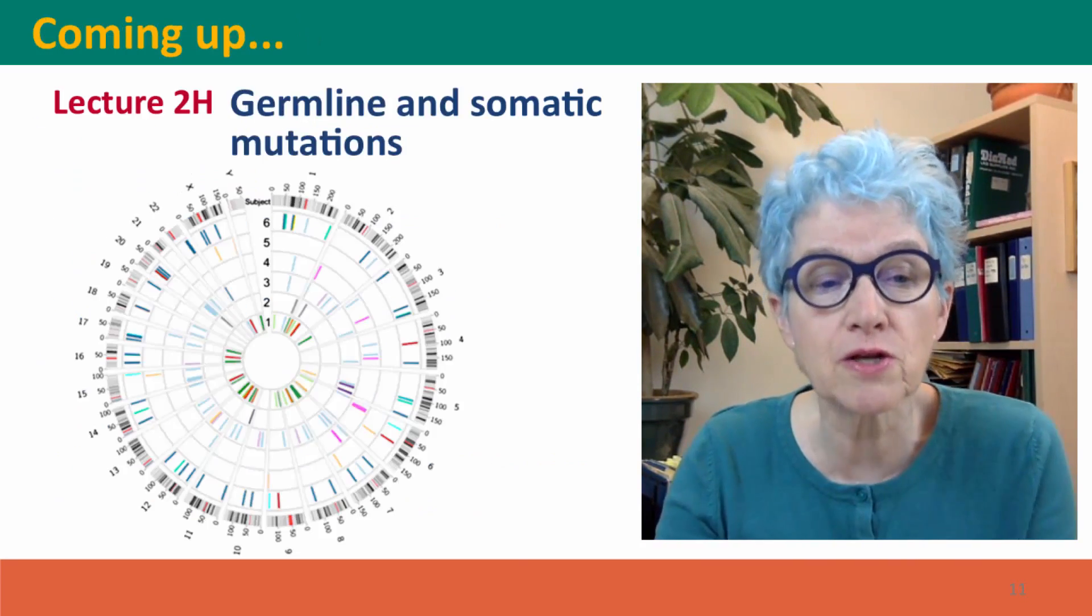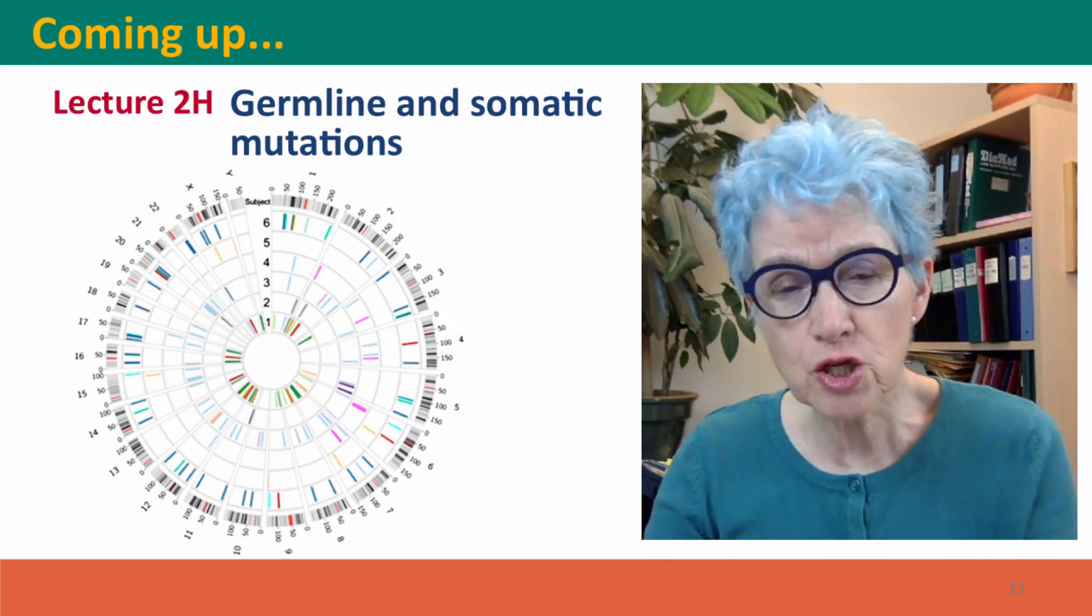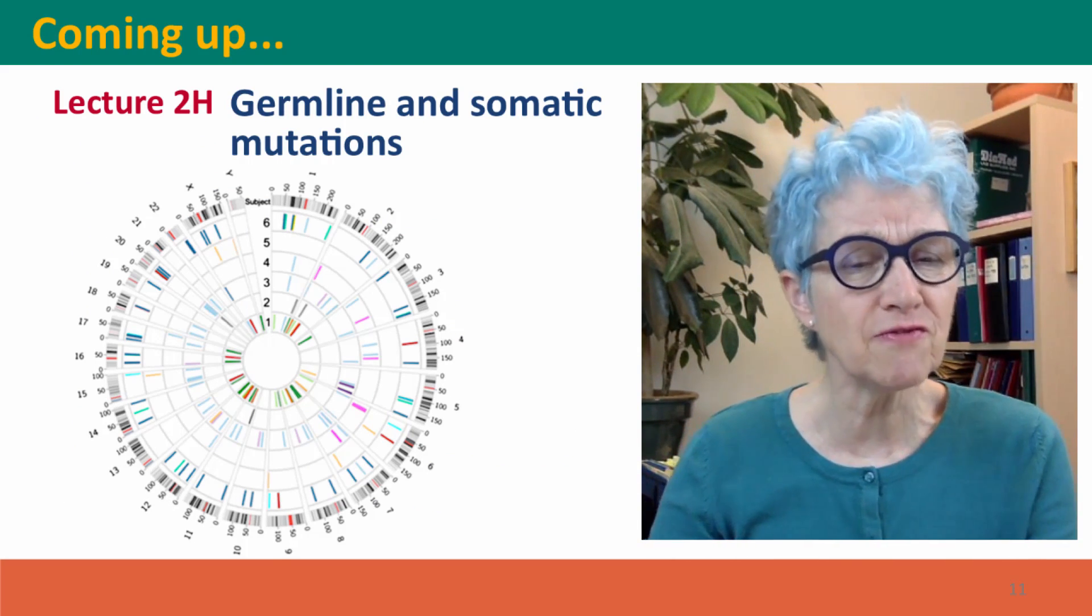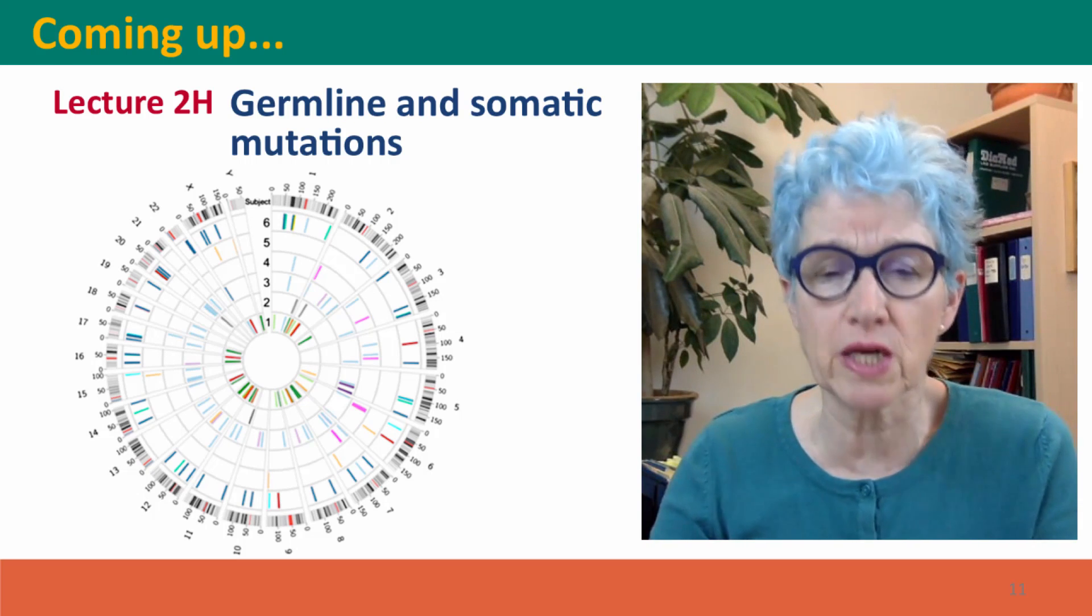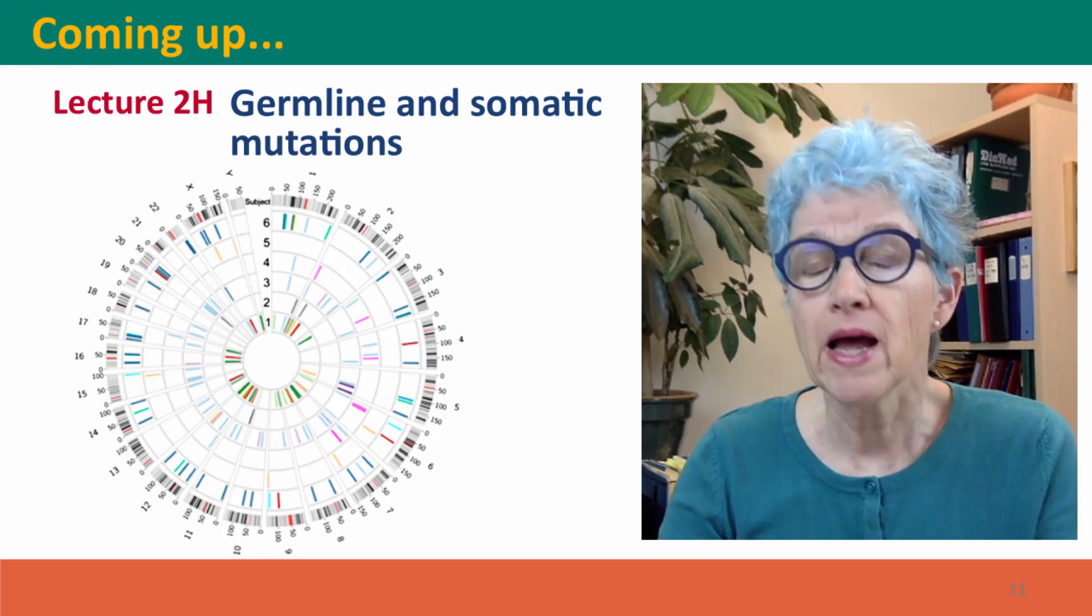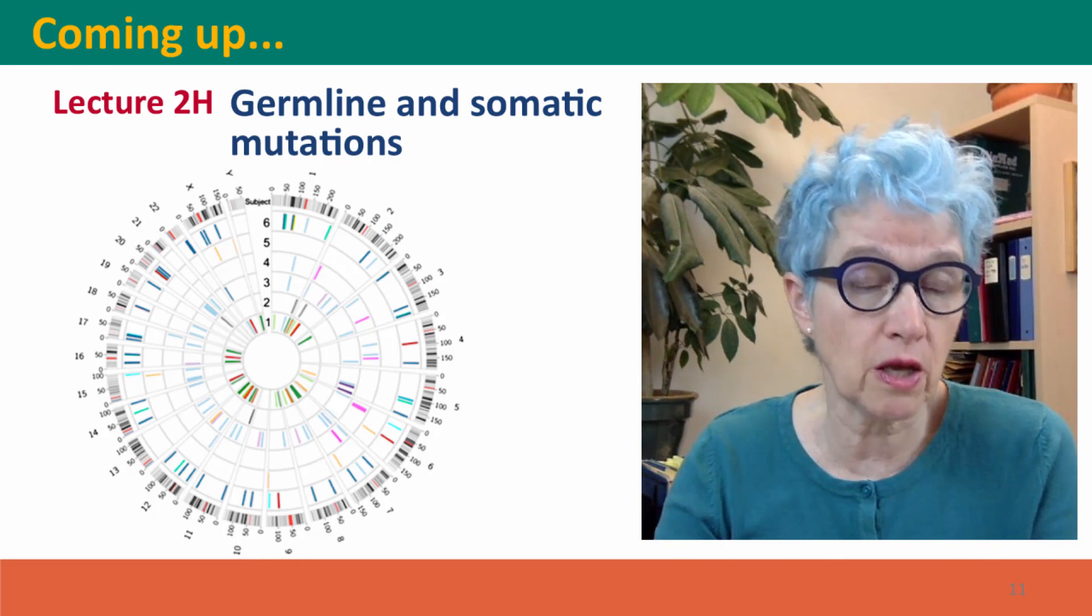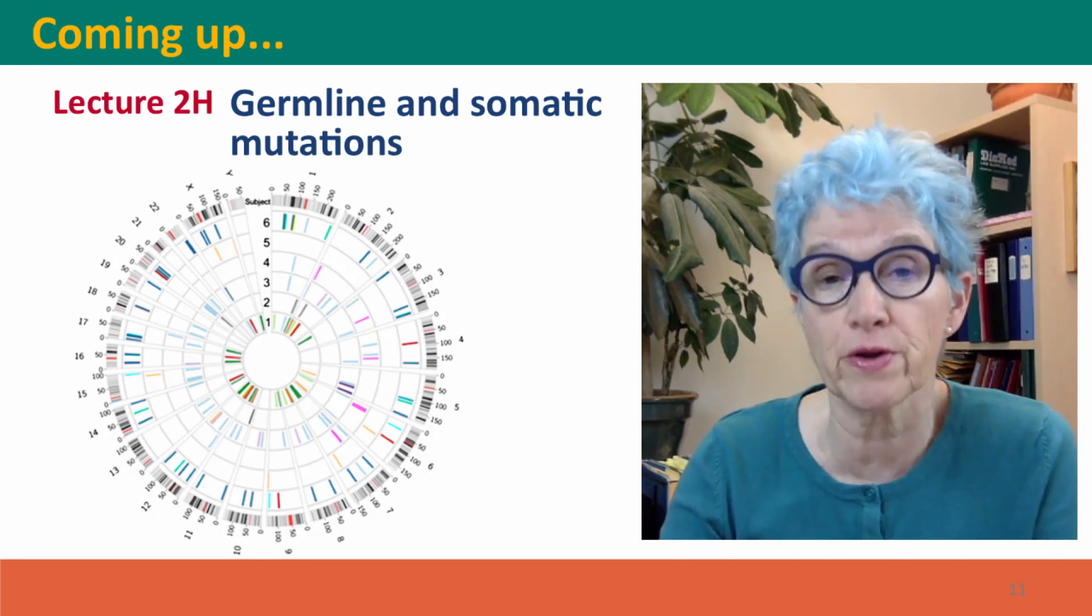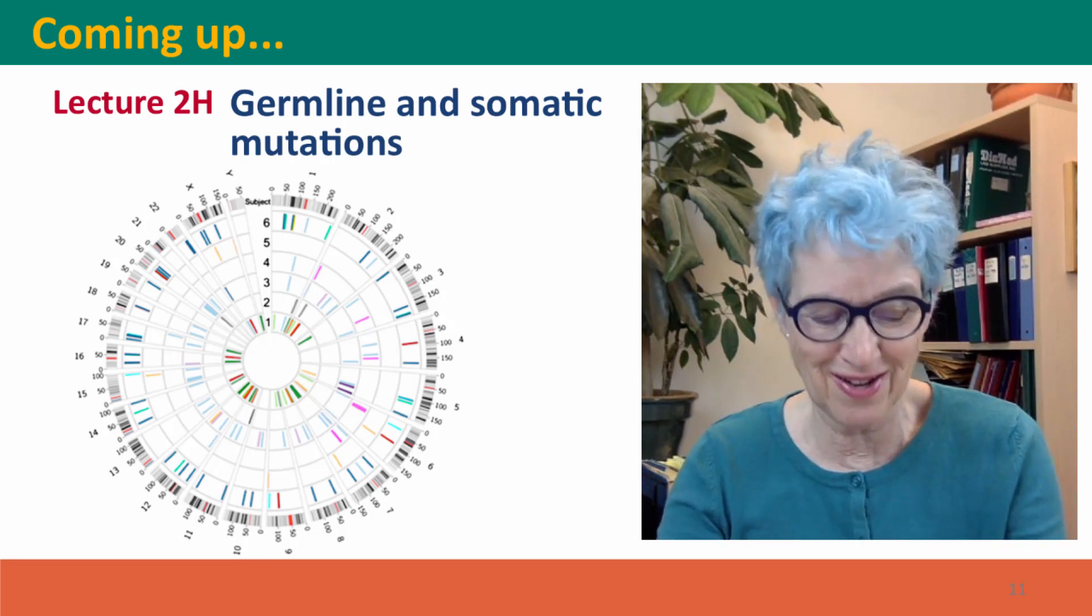Coming up next, we're going to talk about a distinction between two kinds of cells that mutations can happen in: germline cells and somatic cells. This will prepare us to think about things like the roles of mutations in the development of cancer. I hope to see you there.